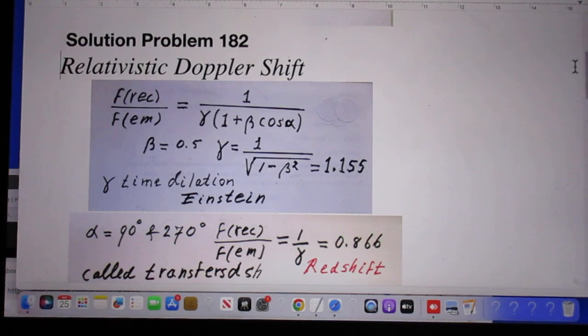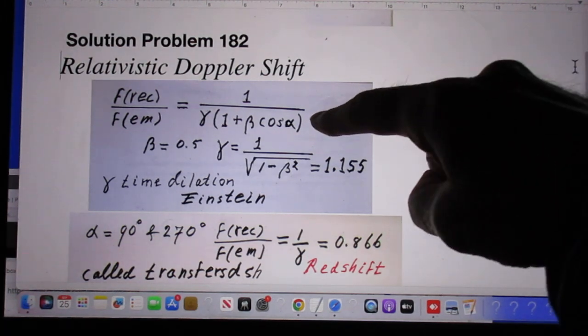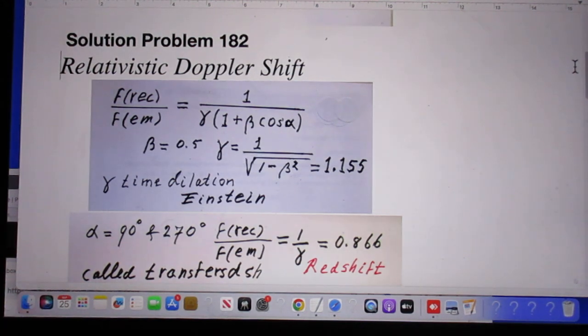Here is the key equation in relativistic Doppler shift. The frequency received divided by the frequency emitted by the person in the galaxy is given by this equation. Gamma is due to the time dilation. It is the famous Lorentz contraction, one over the square root of one minus beta squared. In our case, it is 1.155.